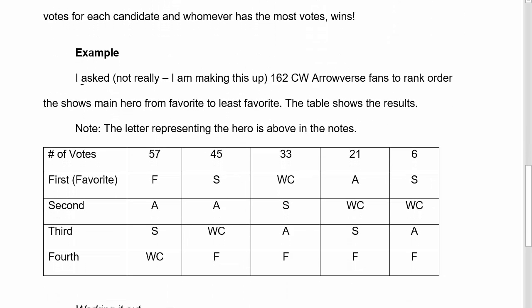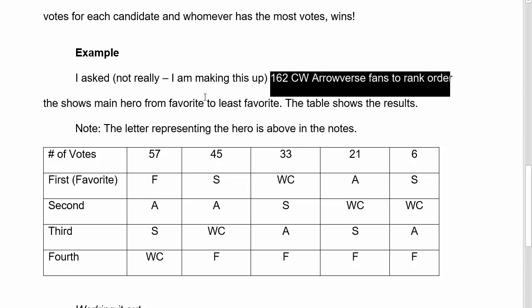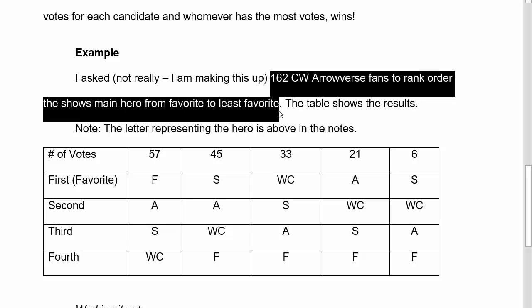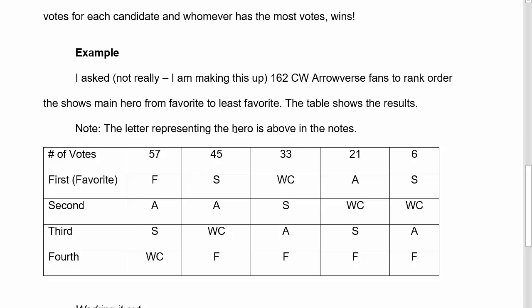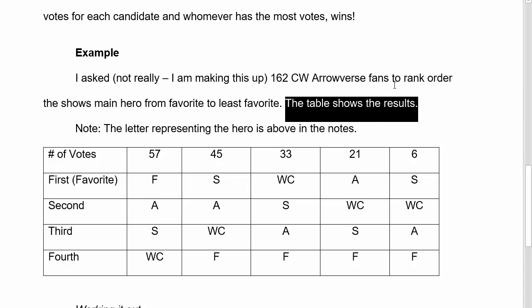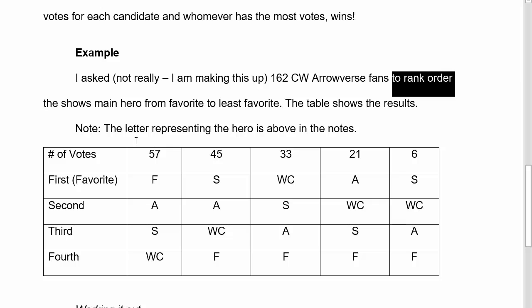In our example for today, I asked roughly 162 CW Arrowverse fans to rank order the show's main hero from favorite to least favorite. And again, we still love these people, they're just not our super favorite. The table shows those results, and the letters above represent Flash, Arrow, Supergirl, and White Canary.